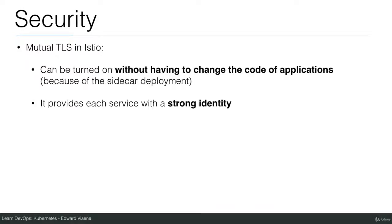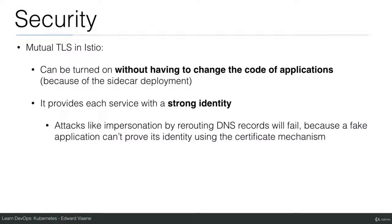Istio provides each service with a strong identity. Once Istio starts issuing certificates, a service has an identity — an identity that can be verified, because a certificate with a particular name will only belong to a particular service. Attacks like impersonation by rewriting DNS records will then fail, because a fake application cannot prove its identity using the certificate mechanism. If you would have a fake application within your cluster, it still cannot impersonate a real service, even if it manages to change the DNS records, because the certificates will never match. This rogue service will not have the certificates that the real service has — that's why it provides you with a strong identity. If the identity doesn't match, communication will not work.